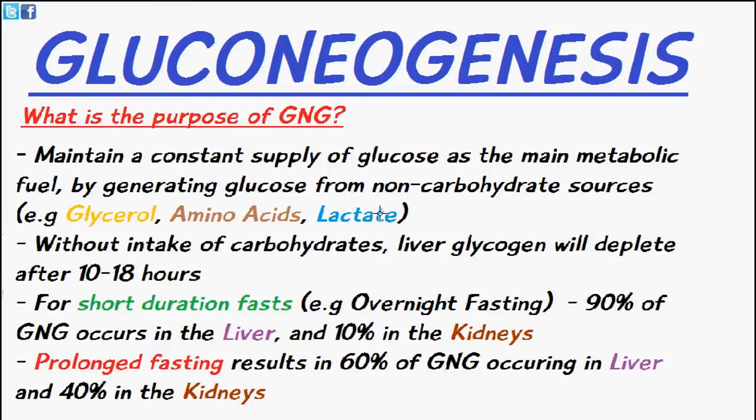Without the intake of these carbohydrates, liver glycogen will deplete after 10-18 hours. For short duration fasts — for example from night time until breakfast in the morning — 90% of the gluconeogenesis which occurs is in the liver and the remaining 10% occurs in the kidney. Prolonged fasting for a longer duration results in 60% of the gluconeogenesis occurring in the liver and 40% in the kidneys.